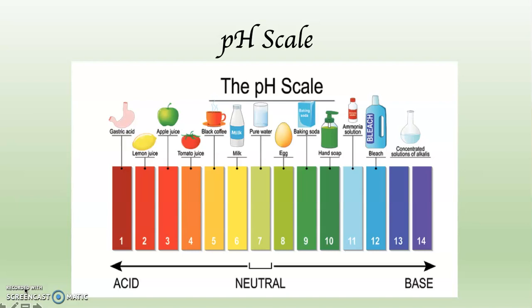And as you go from 7 towards the right — 8, 9, 10, 11, 12, 13, 14 — an egg, how about that? Baking soda — you may very well have known that baking soda is a base. Hand soap, ammonia solution, bleach, and then concentrated solutions of alkalized substances, which would be something like Drano, for example.